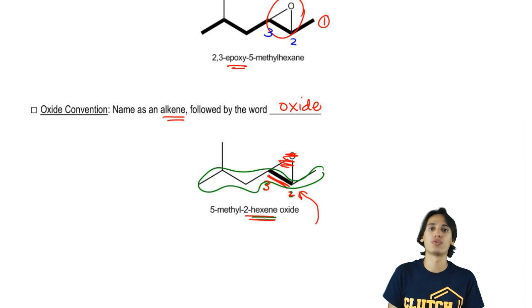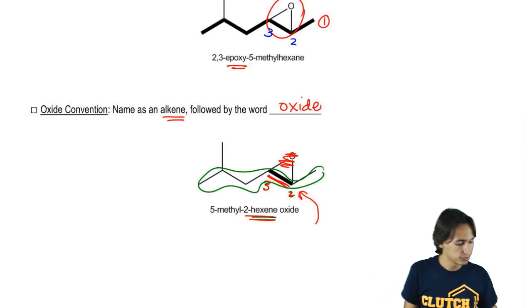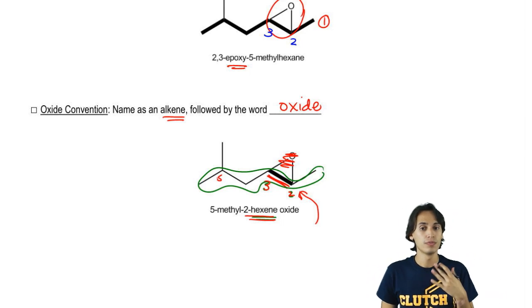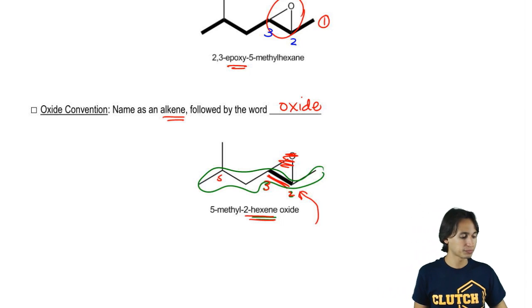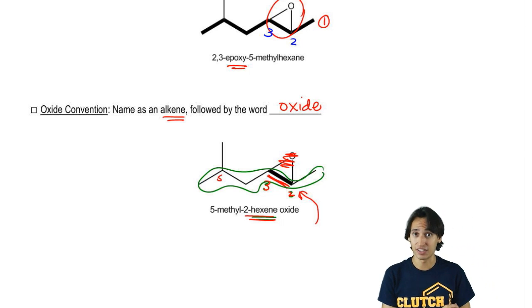Now we need a substituent, the 5-methyl, on the five, so this would be 5-methyl-2-hexene oxide. Now just so you know, if your professor requires stereochemistry, if your professor is asking about stereochemistry, remember that's just like cis and trans and stuff, then you would have to provide it here.